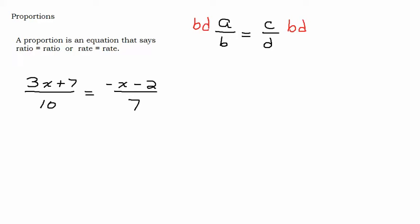All right, so why would I do that? Well, I want to do that because I'm going to cancel this b with this b and this d with this d. And that's going to get rid of the fractions. If you have a proportion, you're going to have fractions because that's sort of the definition of a proportion.